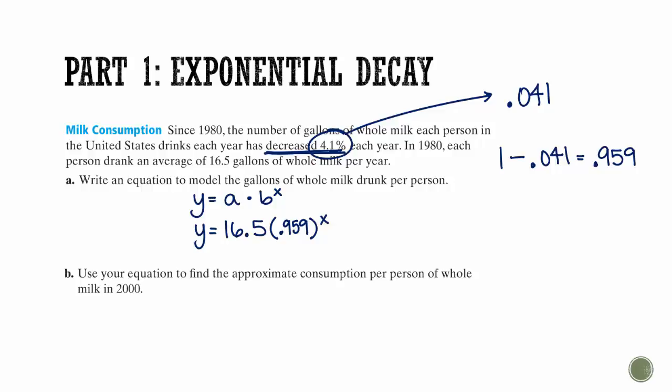Which means that even though it's decreased by 4.1%, that about 96% of people are still drinking milk every year. So once we have this, we can use our equation to find the approximate consumption per person of whole milk in the year 2000. Now, we've done problems like this before. We don't want to plug in 2000, because this says since 1980. So if we stop and think, there was 20 years that went on in between those, and that's what we're going to plug in for our X. So we have Y equals 16.5 times 0.959 to the 20th power. And then we can just plug this into our calculator. And we end up with 7.14 gallons.